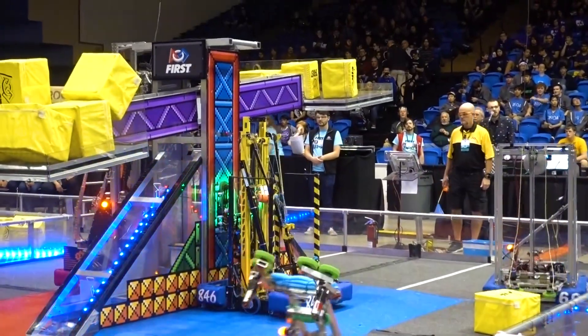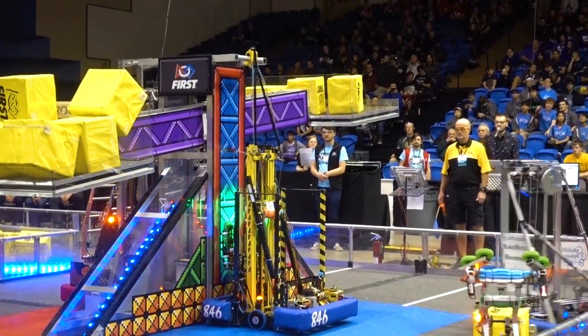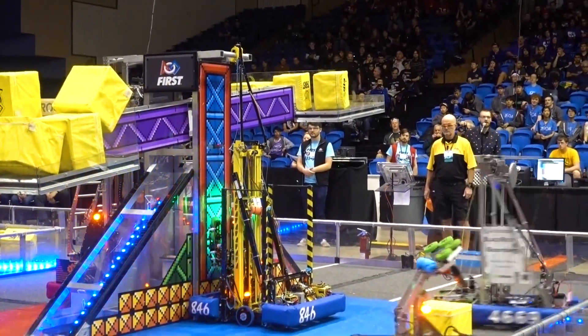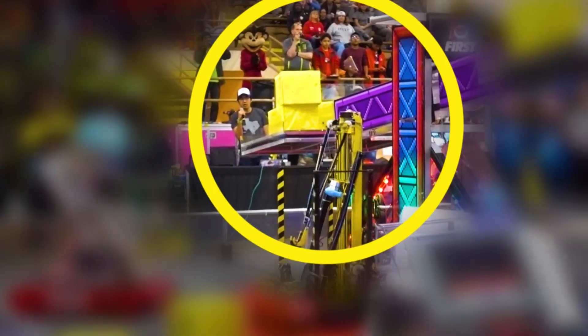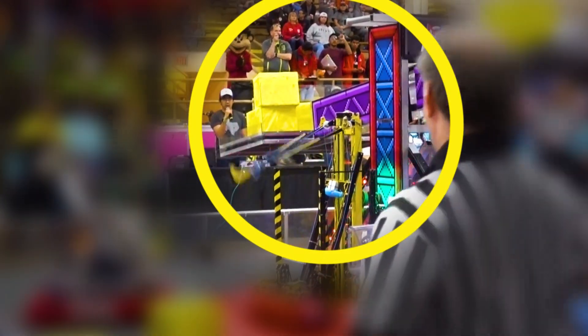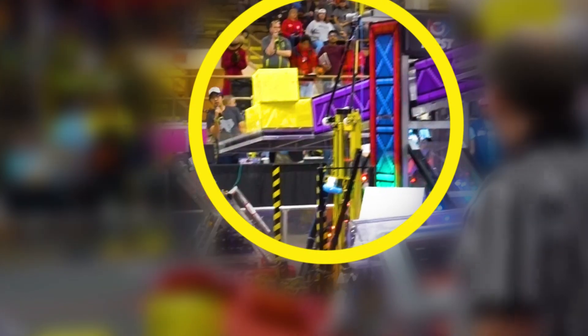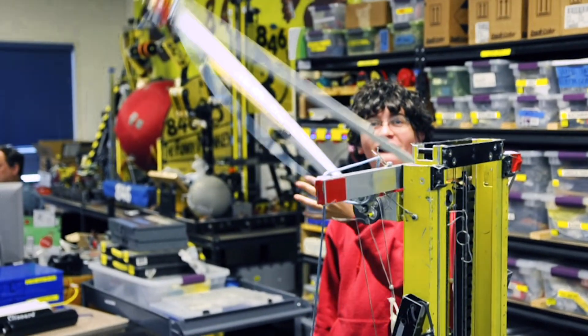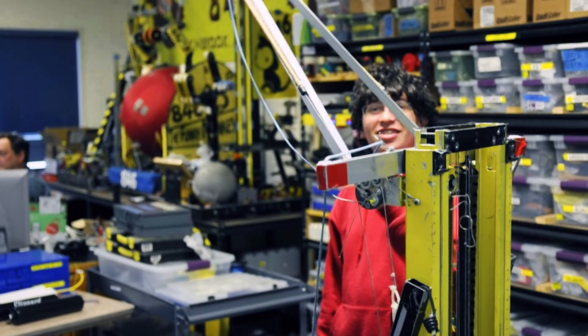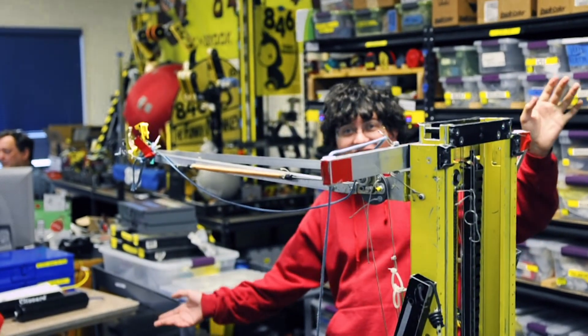Here is our 2018 robot, which played the First Power-Up game. Here we used spring counterbalancing on our hook deployment mechanism, which allows us to climb in endgame. This reveals one of the first benefits of spring counterbalancing, which is symmetrical motion, meaning that it takes the same amount of force to push something up as it does to push it back down.